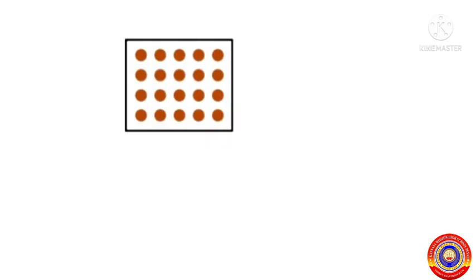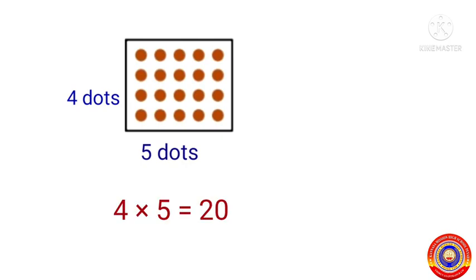Children, here is a rectangle with 20 dots. These dots are arranged such that the number of dots widthwise is equal to 5 and the number of dots heightwise is equal to 4. Therefore the total number of dots is equal to 4 into 5, that is equal to 20.